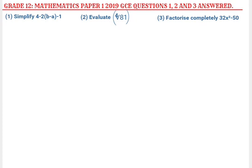As I said earlier, I'm going to answer three questions that came in the 2019 GCE examination paper. Question 1 was: simplify 4 minus 2, open bracket, B minus A, close bracket, minus 1. So, this is the question students were asked to simplify.